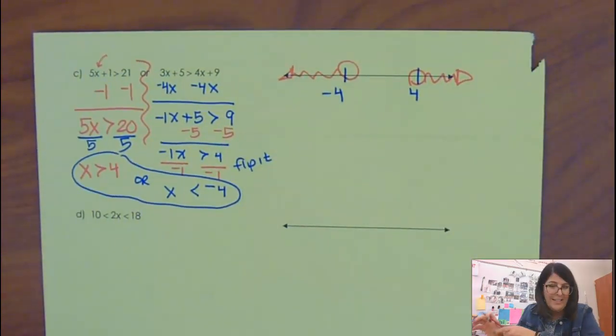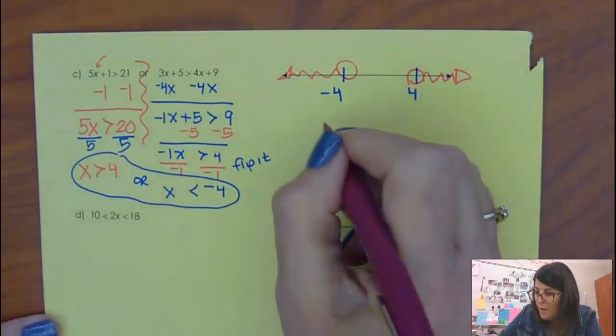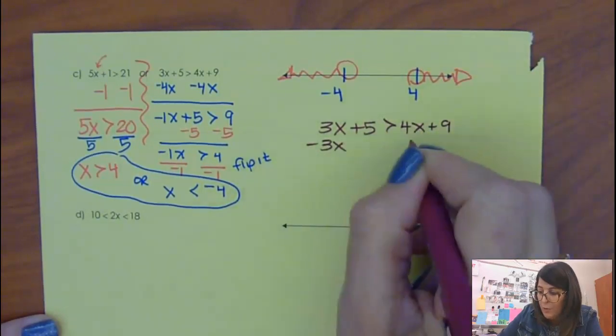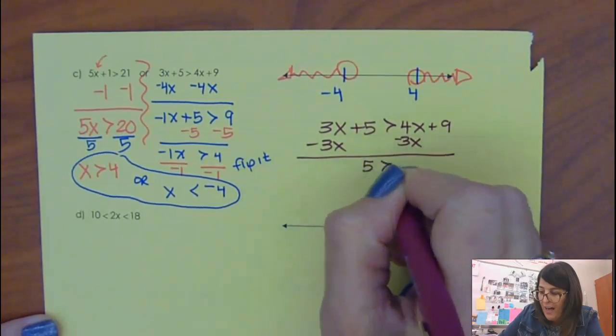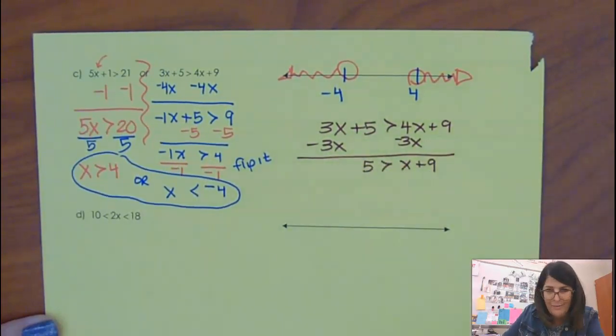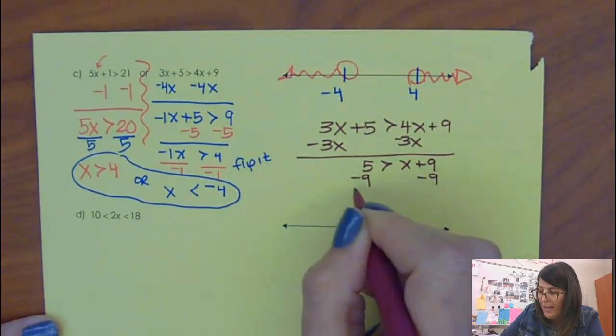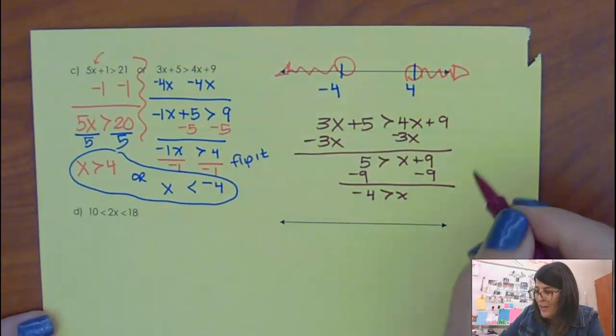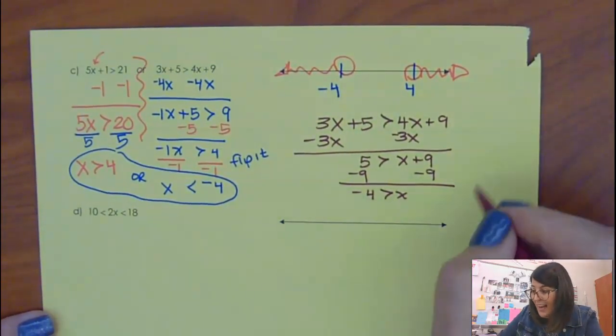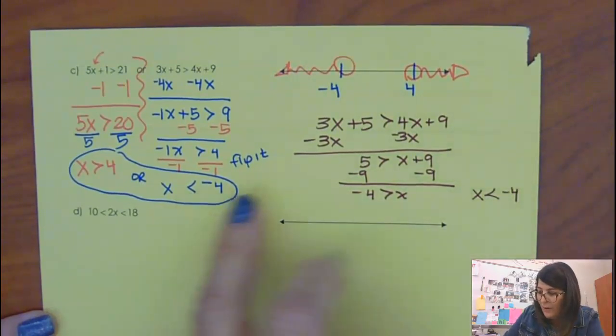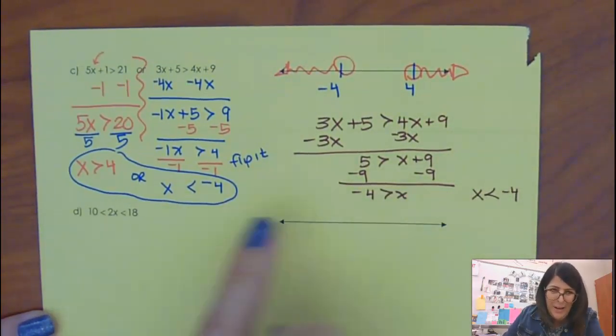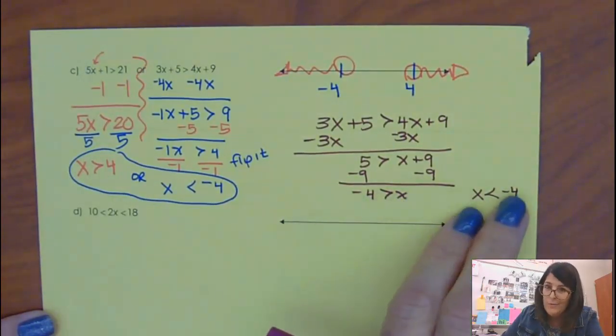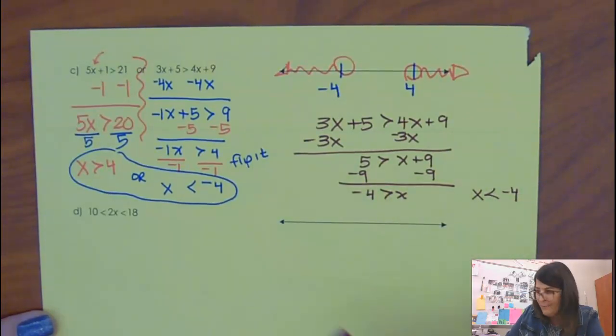Now before we move on, let's have a conversation. Because I moved the 4X over, but you might have said, hey, I don't like dealing with negatives, so I'm going to move the 3X over. So then I would have 5 is greater than X plus 9. Then I would move the 9 over, and I would have negative 4 is greater than X. But I want to write that to be able to figure out how to shade. If negative 4 is bigger than X, that means X is smaller than negative 4. So I got the same answer, but I had to flip it at the end to understand it. When I rearrange the negative 4 and the X, it makes me rearrange the inequality.